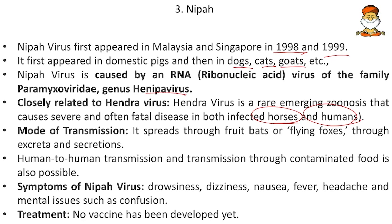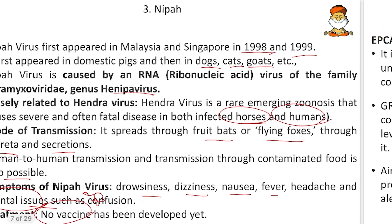Nipah spreads through fruit bats or flying foxes through excreta and other body fluid secretions. Human-to-human transmission and transmission through contaminated food is also possible. Symptoms include drowsiness, dizziness, nausea, fever, headache and mental confusion — mental confusion being a unique symptom of Nipah. No vaccine has been developed yet; Nipah has no vaccine and no treatment.